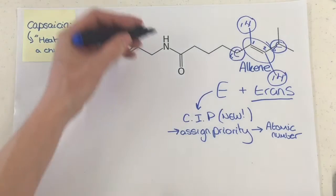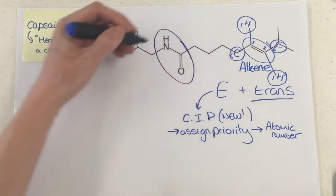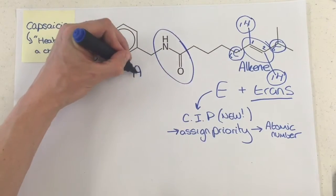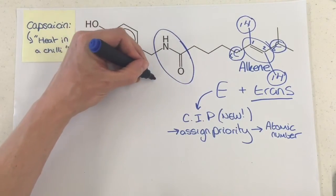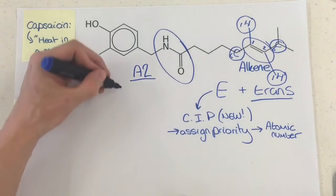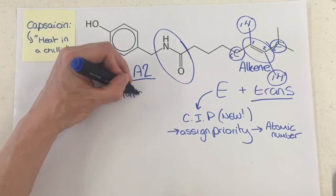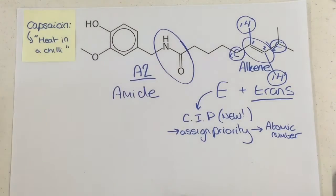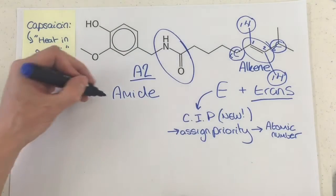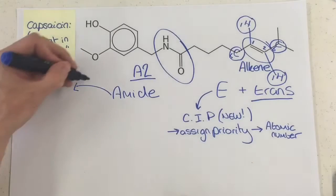Moving over to this part of our structure just here — this is in the current A2, but it's also in the adjusted new A2 specification starting in 2015. This is an amide link. The amide link — you know how to form it.